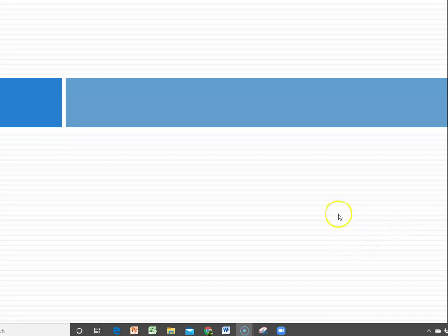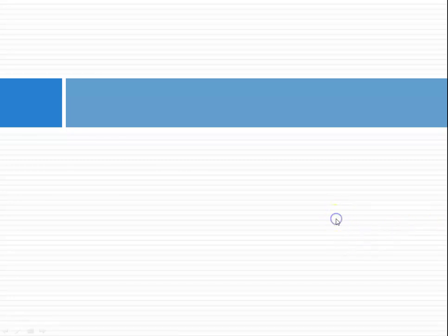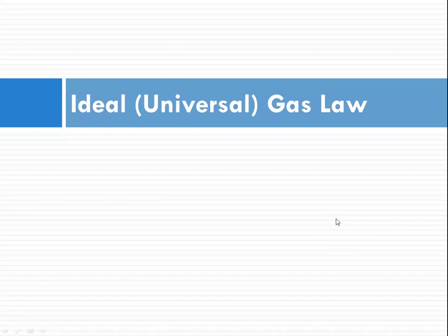Hello class, this is Ms. Augustine, and today we're going to be talking about the ideal or universal gas law, which is PV equals NRT.